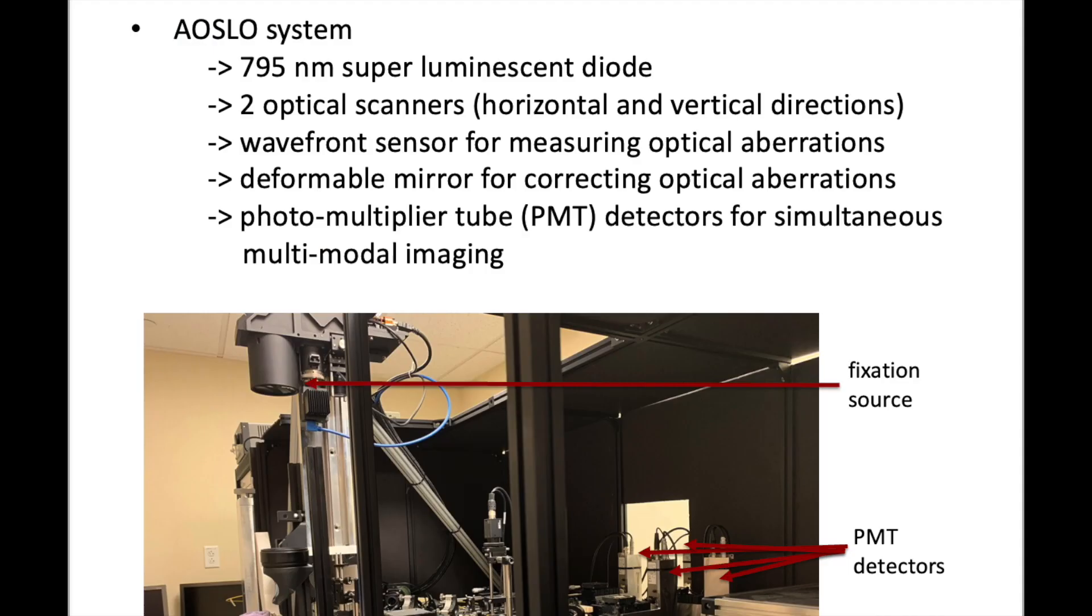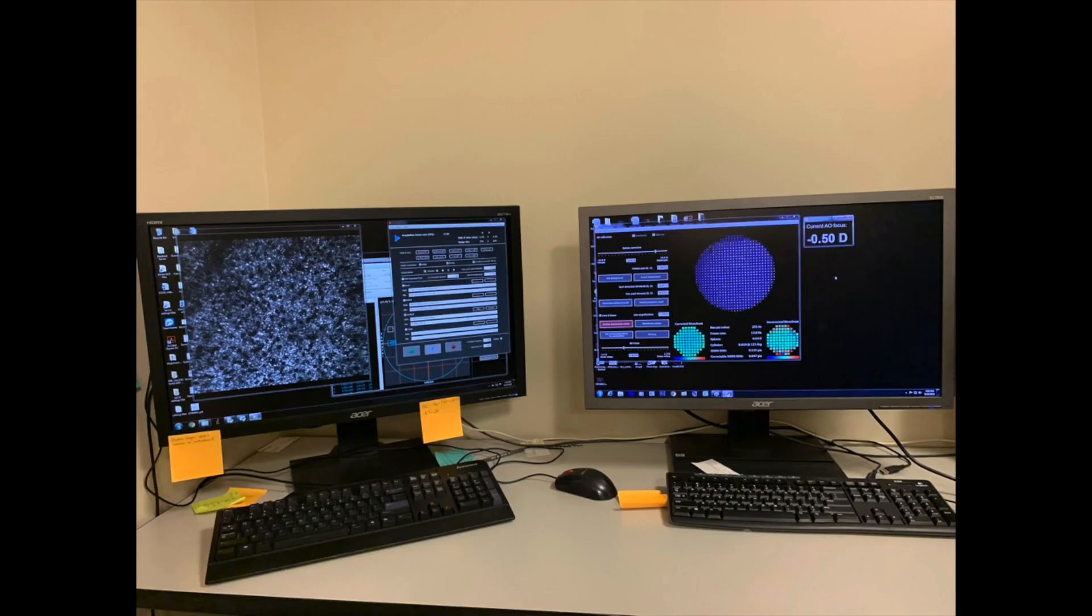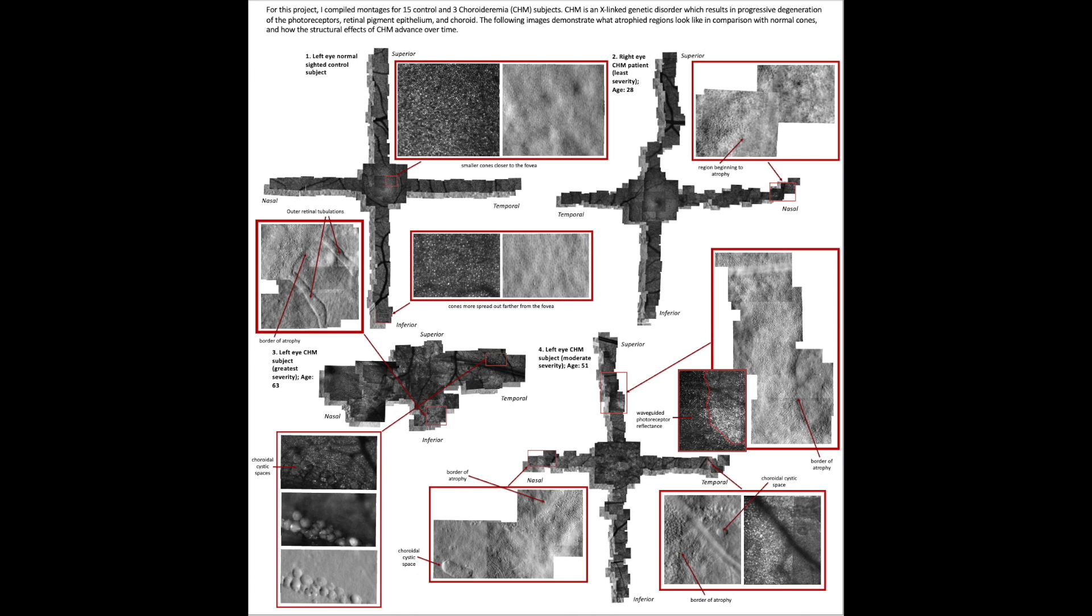To provide a brief overview of what adaptive optics is, it is a technology that, when added onto a typical optical device, can allow for greater resolution of the subcellular properties of the retina. It can do this by correcting for visual aberrations which distort the light being reflected back from the retina and lens of the living eye.